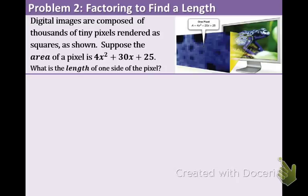Example 2 is an application problem about computer screens. Digital images are composed of thousands of tiny pixels rendered as squares. Suppose the area of a pixel is 4x² + 30x + 25. What is the length of one side of the pixel? Since they're squares, the sides are equal.